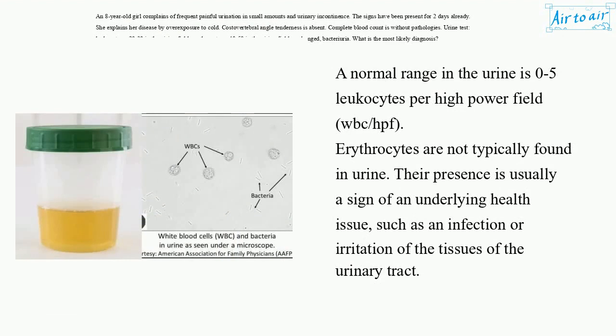A normal range in the urine is 0-5 leukocytes per high power field (WBC/HPF). Erythrocytes are not typically found in urine. Their presence is usually a sign of an underlying health issue, such as an infection or irritation of the tissues of the urinary tract.